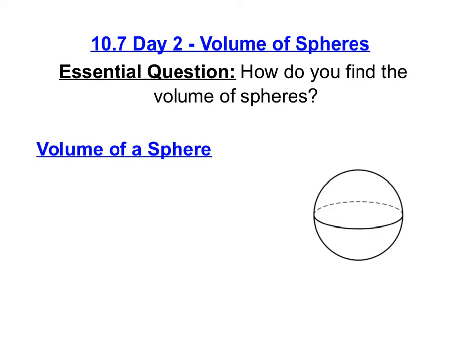So let's start with the formula for the volume of a sphere. For the volume of a sphere, you're going to use the formula volume equals 4 pi r cubed all over 3.